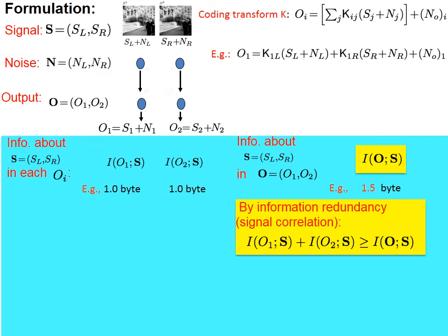For example, even when O1 exclusively receives left eye input and O2 exclusively from the right eye, they can still carry redundant information because the inputs to the two eyes are correlated with each other. Given input in one eye, one can guess very well much of the input in the other eye. So although each neuron carries one byte of information, half of that may already be in the other neuron's response. This correlation between inputs to the two eyes is a statistical property of visual inputs.